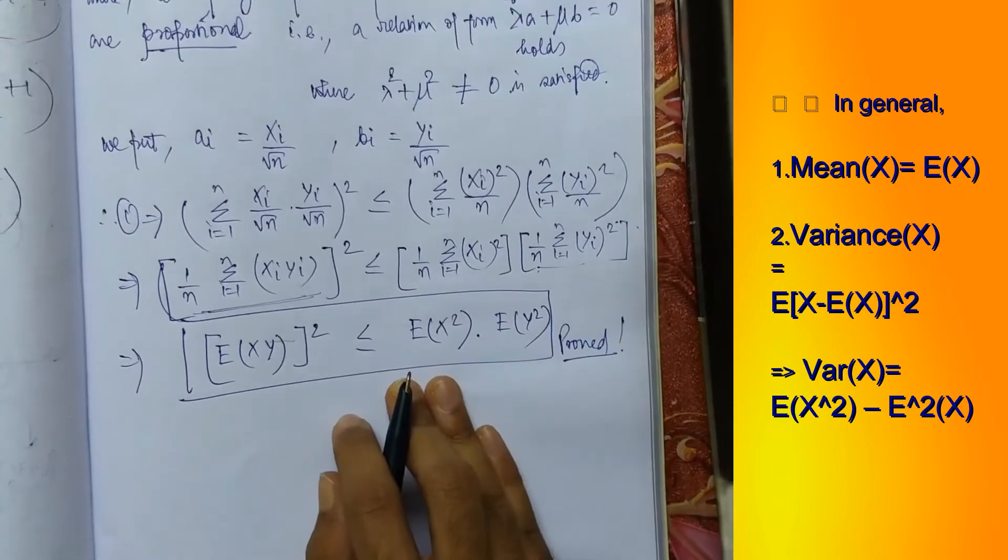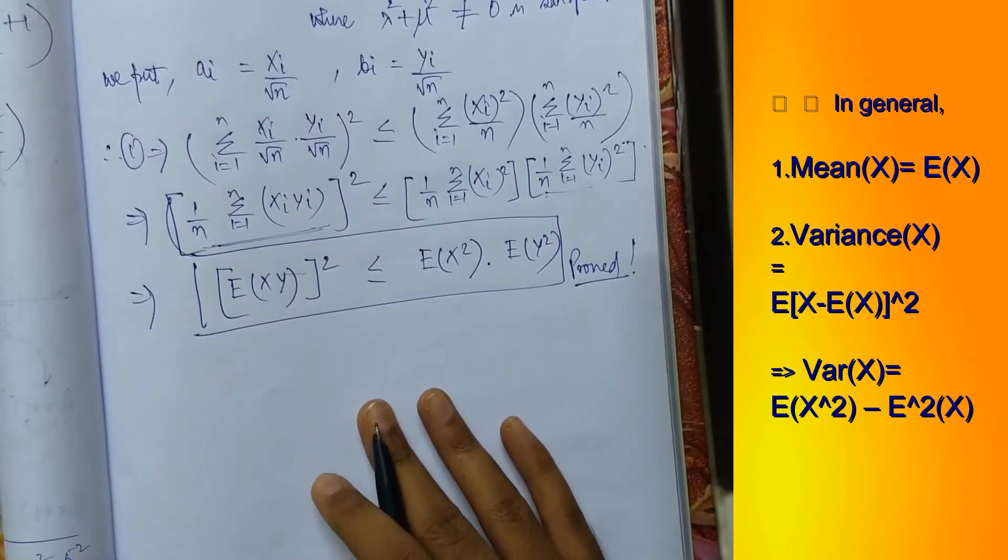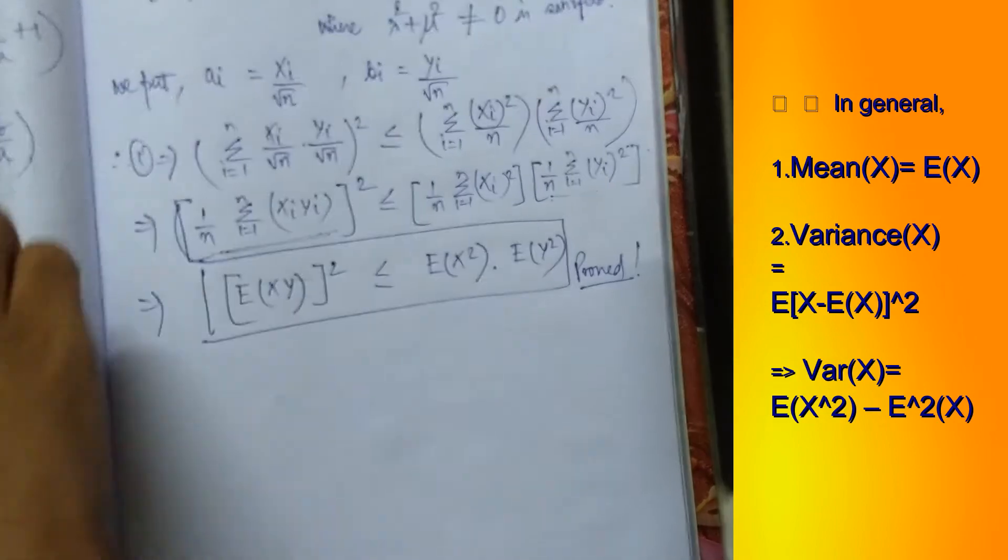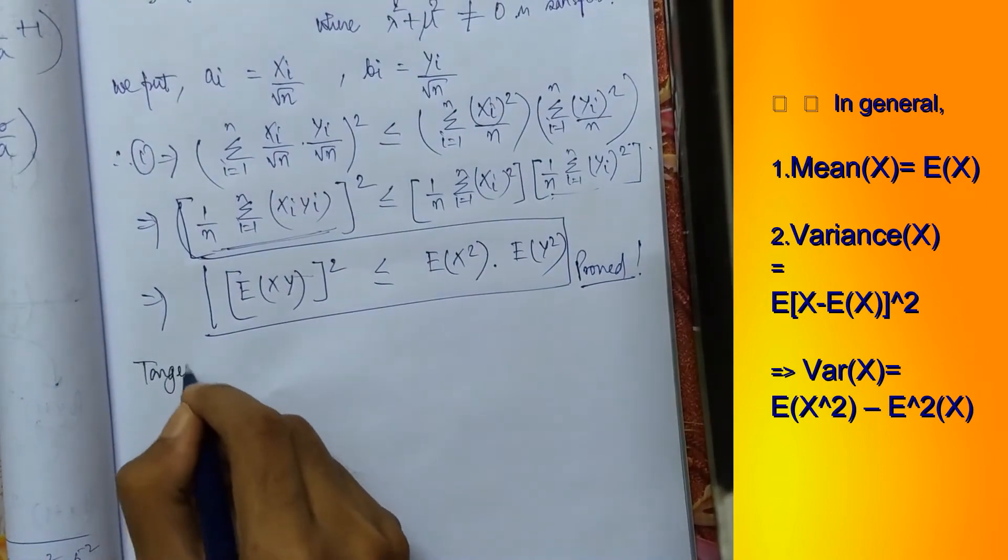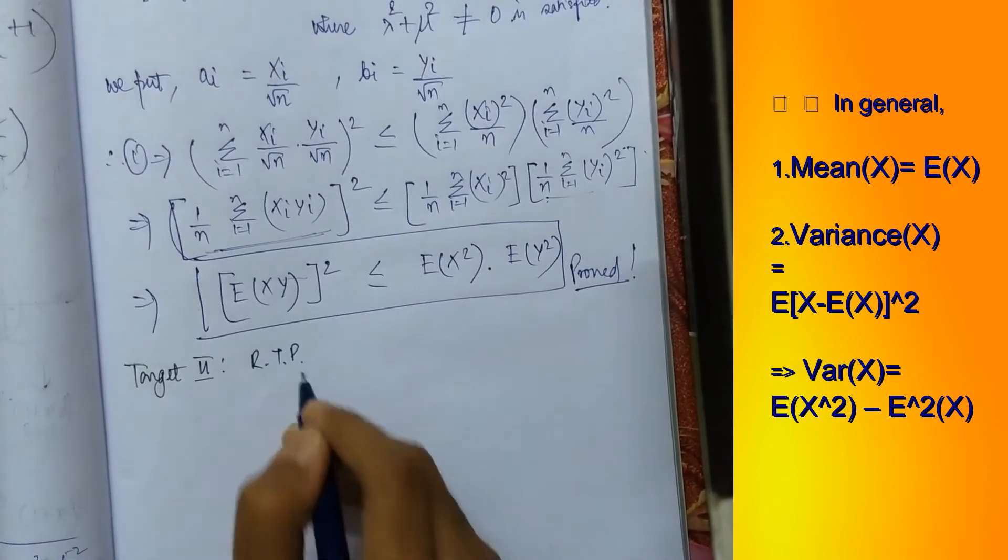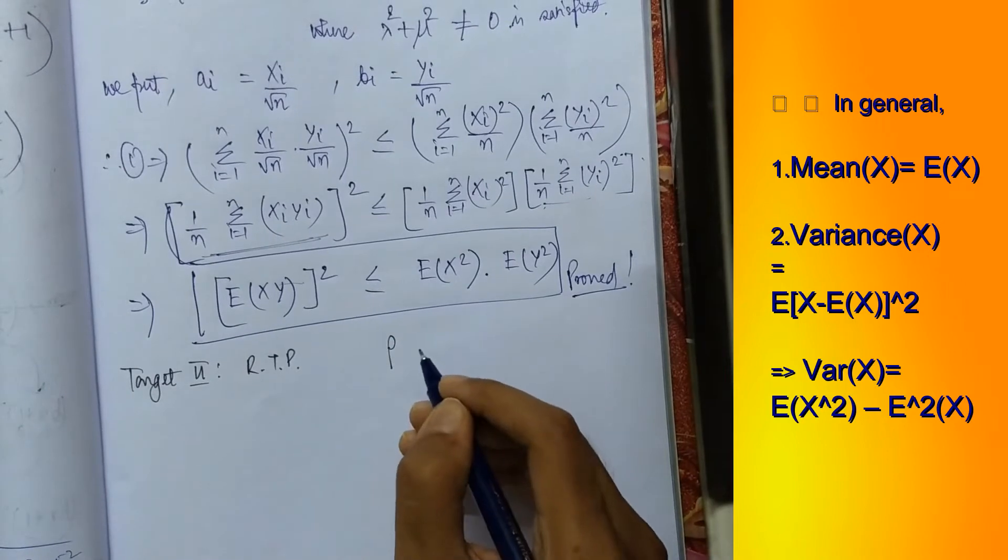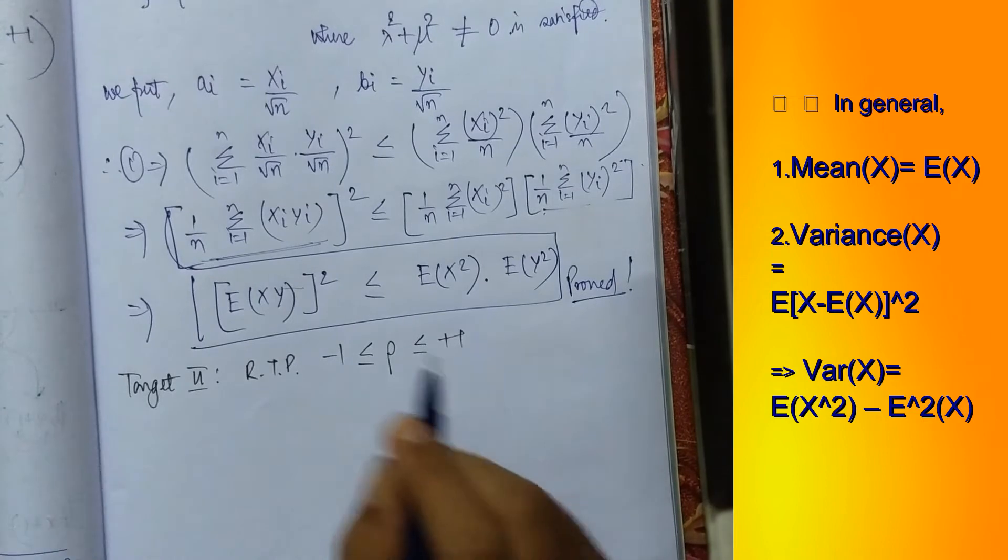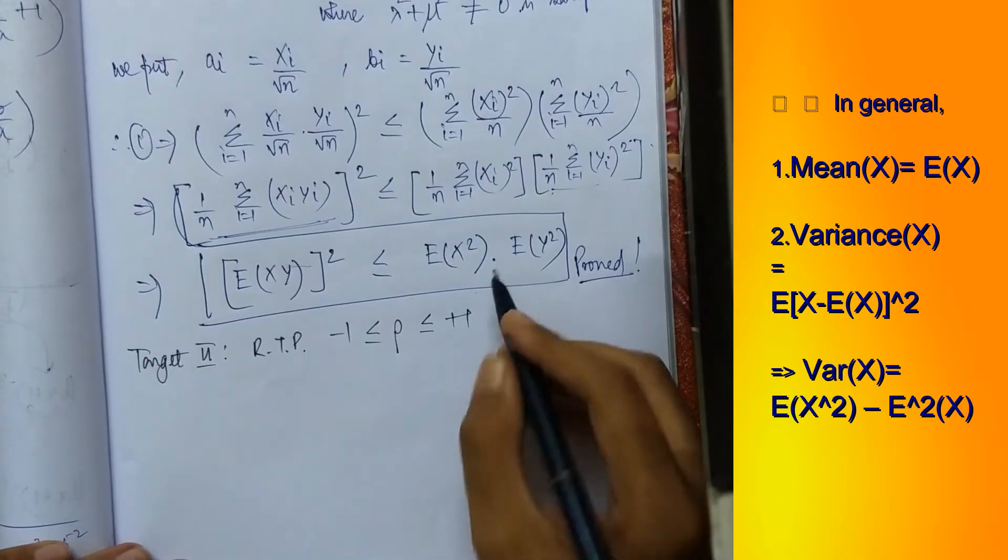Fine. Now from here on we have an additional proof to perform which says that the correlation coefficient always lies between minus 1 to 1. So we have in here our second target. Target 2, required to prove the correlation coefficient which is represented as rho, this lies between minus 1 and plus 1. We name this expression as 2. Fine.